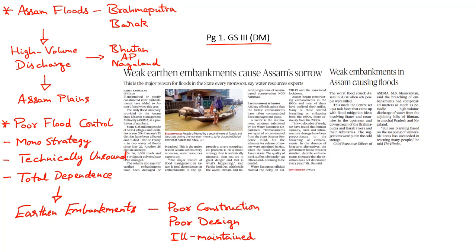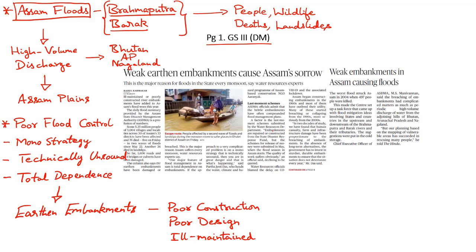The northeastern state of Assam has been hit by massive floods over the last few weeks caused by the Brahmaputra river, the Barak river and their tributaries. These floods have already displaced millions of people and threatened the endangered wildlife in the protected areas of Assam. They have even led to landslides, and both disasters combined have led to the death of a number of people.